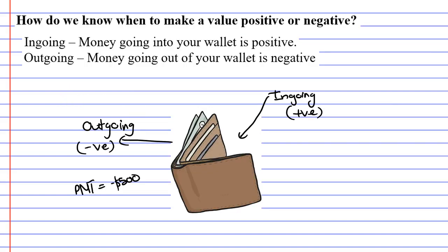Now going back to our wallet, we need to think to ourselves, is this an ingoing or an outgoing? And he's borrowing $5,000, meaning that he's been given it and he gets to put it in his wallet. So it's an ingoing, it's a positive amount.